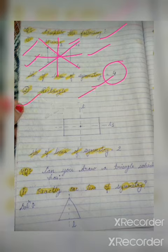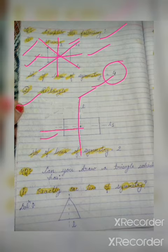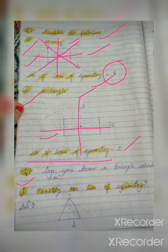Now the next figure is a rectangle. Draw the rectangle and then draw the lines of symmetry. The first line of symmetry is here and the second line of symmetry is here. So in the rectangle, the number of lines of symmetry is two.